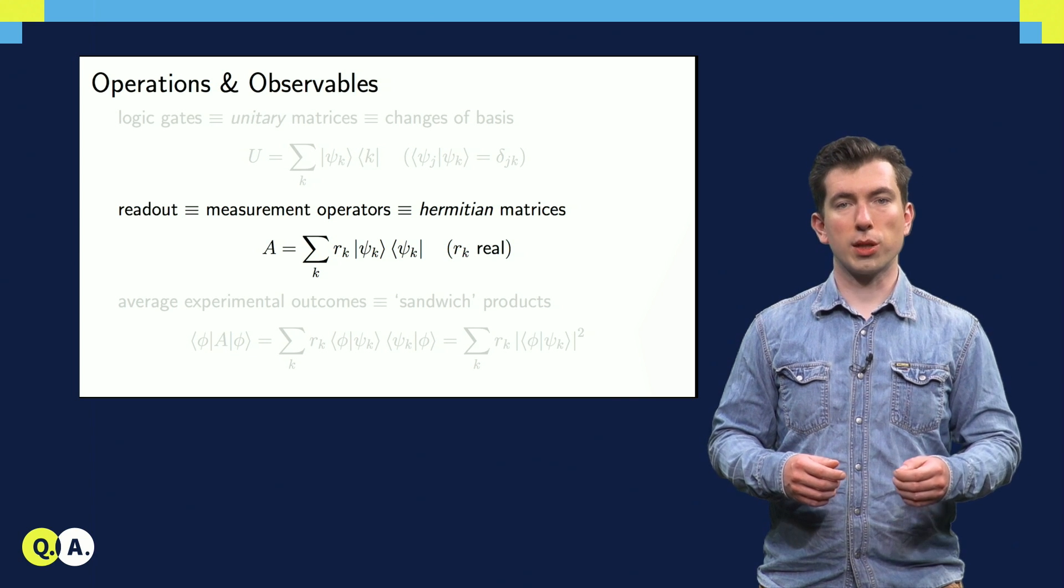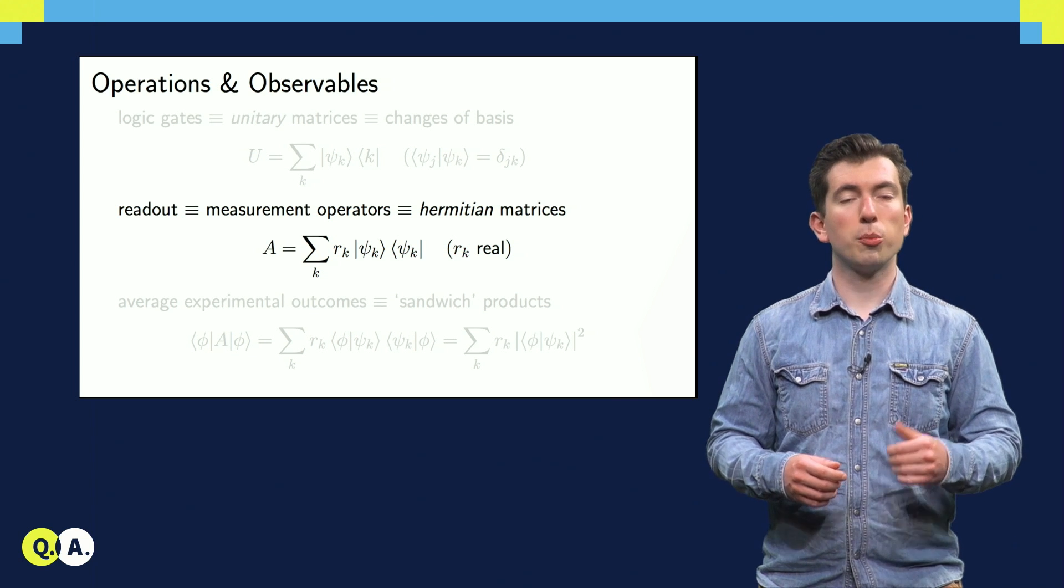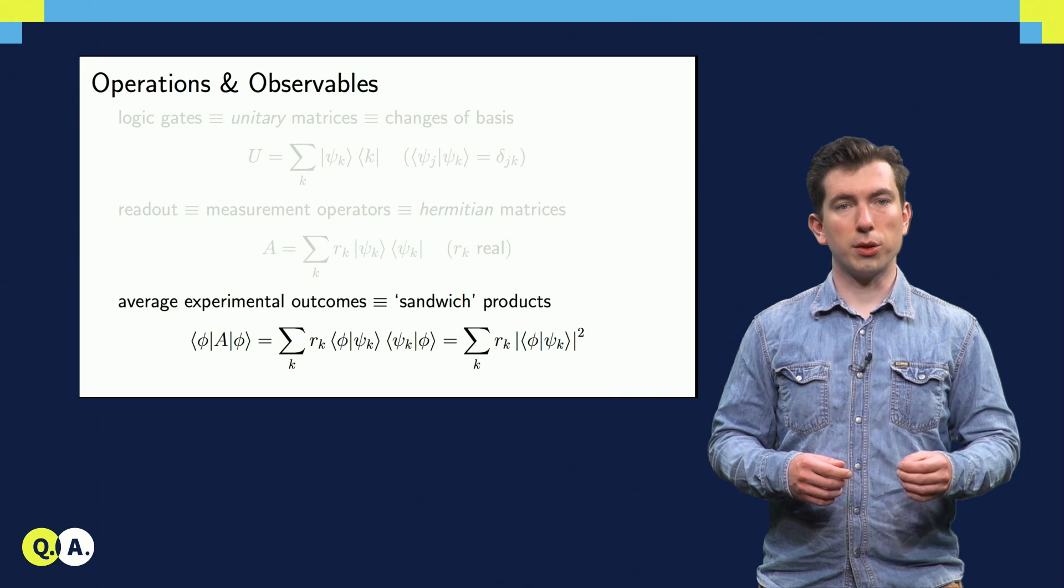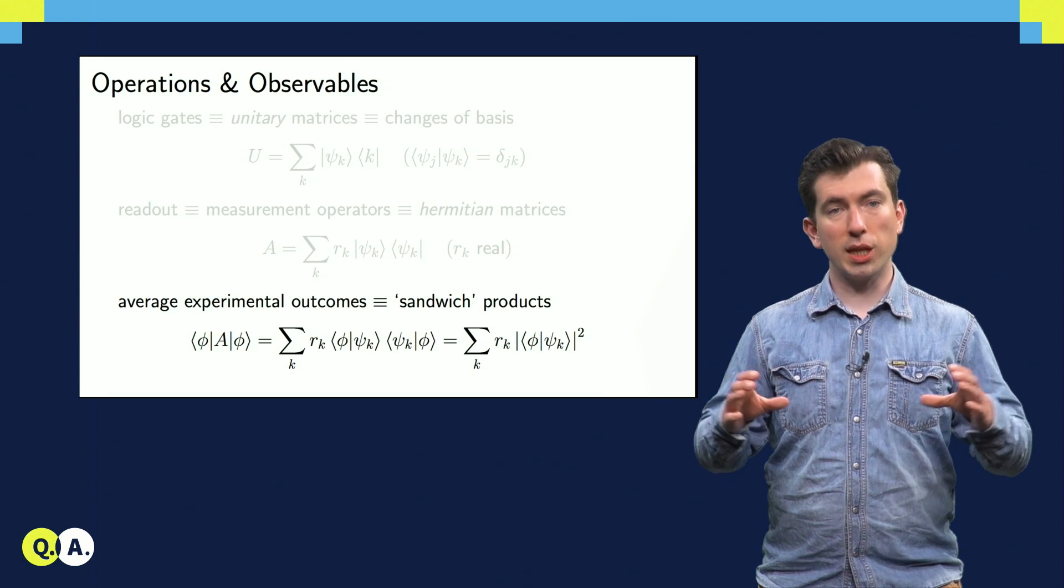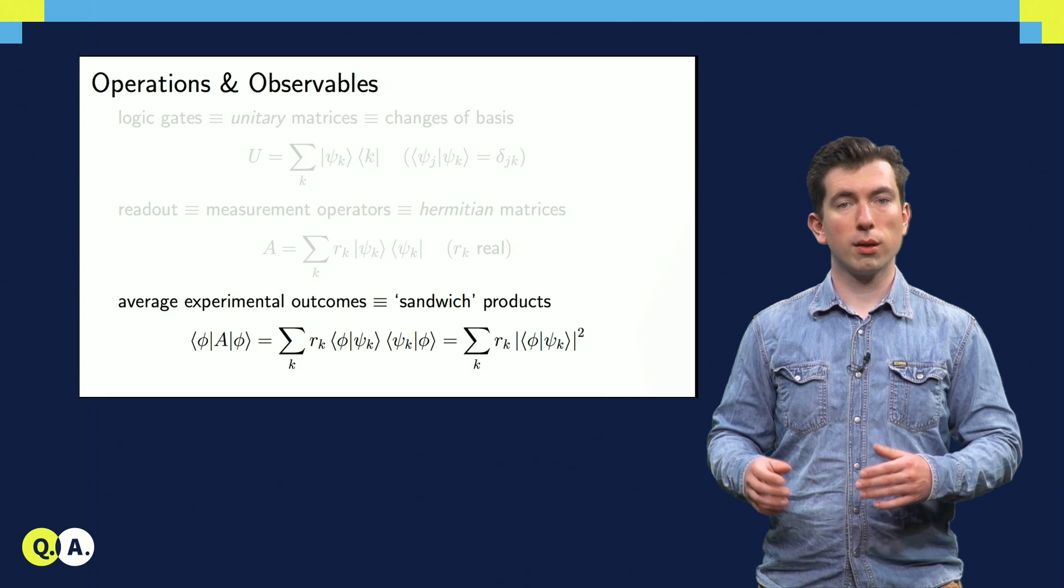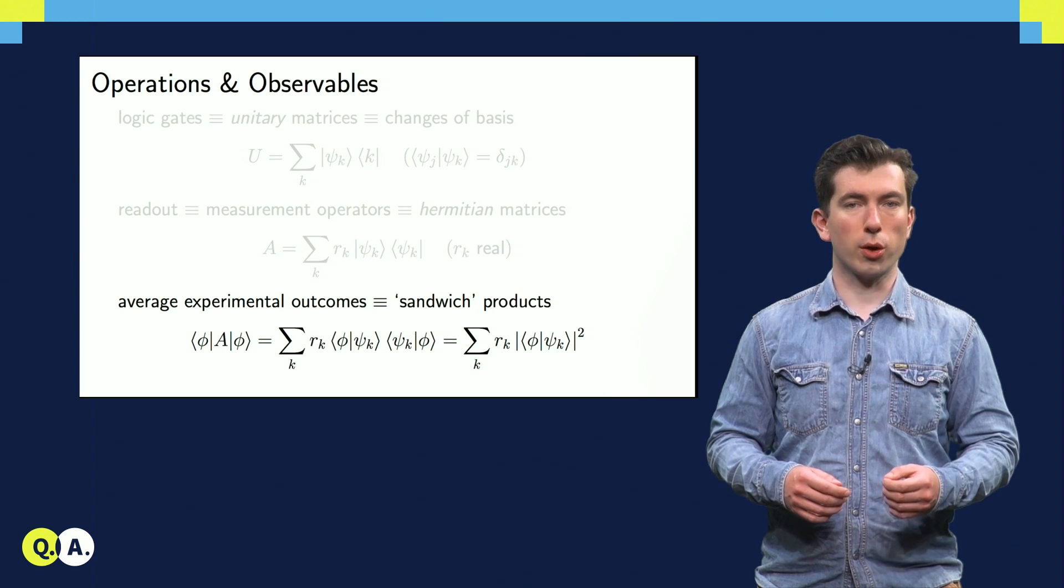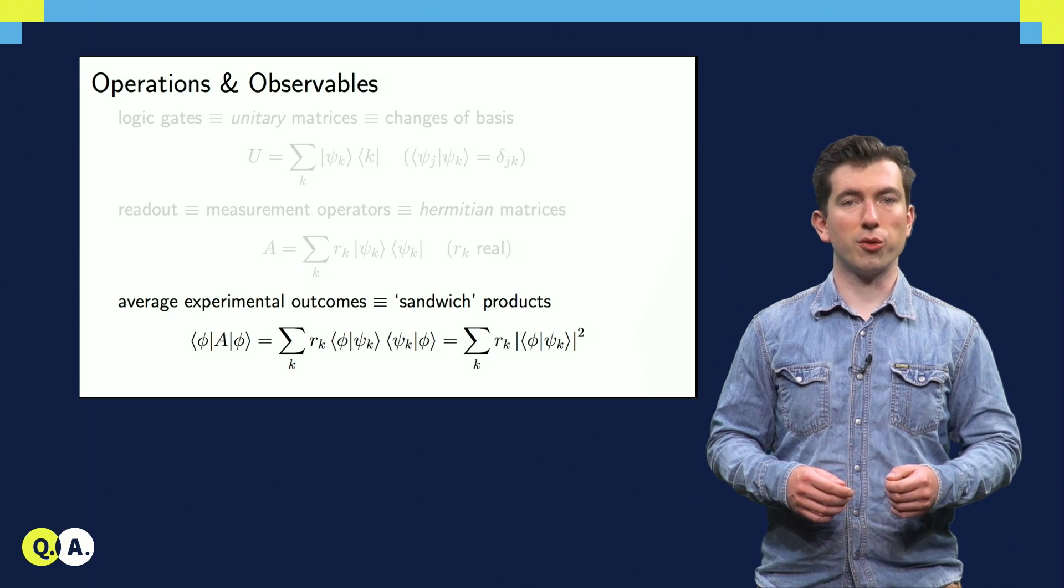If a measurement results in the state psi_k, the value R_k becomes known to the experimentalist. The expected value for this measurement is given by sandwiching the measurement operator with the state that we're measuring, and the expectation value is just a weighted sum of the R_k terms with probabilities given by Born's rule.